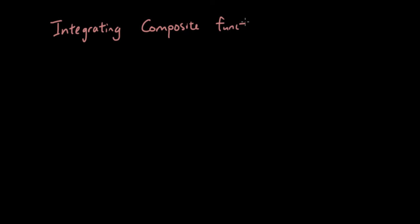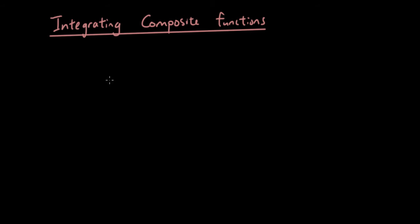Hey guys, it's Eddie the Magic Monk. Today I want to present to you guys a different way of integrating composite functions. On the internet, most tutorials do this through a method called u-substitution. And even though it is a good method, it's a little bit complicated to understand why you do it. So if that's the case, you might as well just use a formula, which is a lot easier because you just follow the same thing and you have a lower chance of getting it wrong.